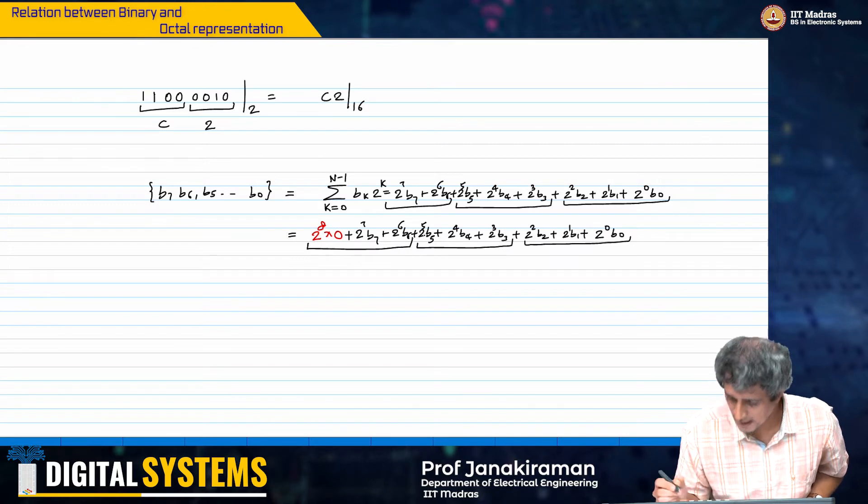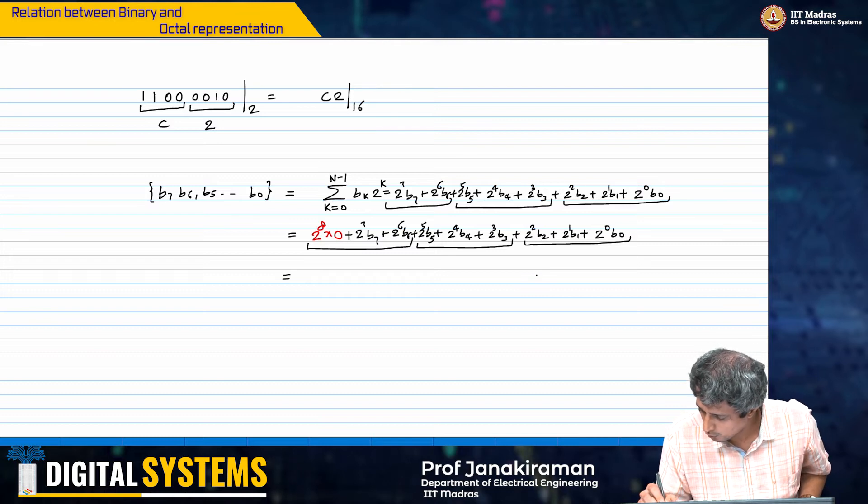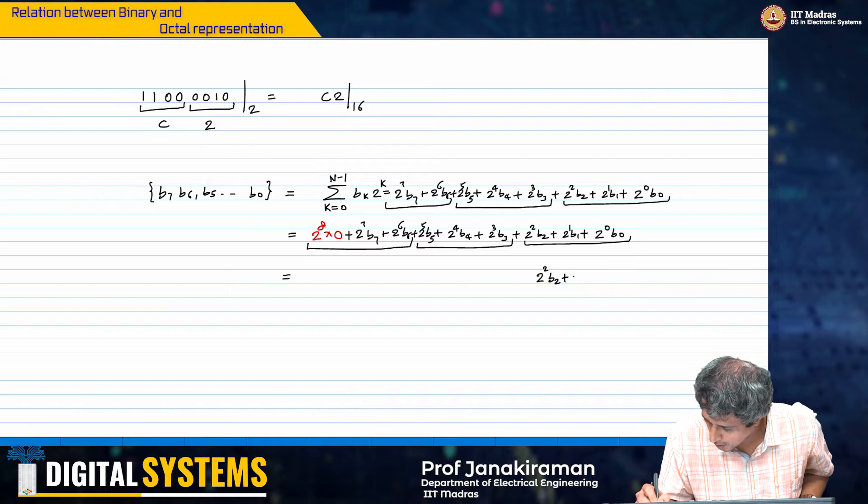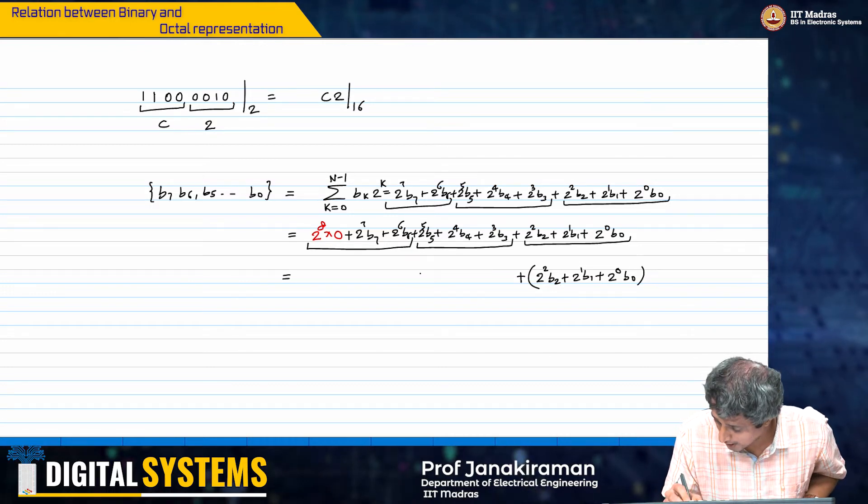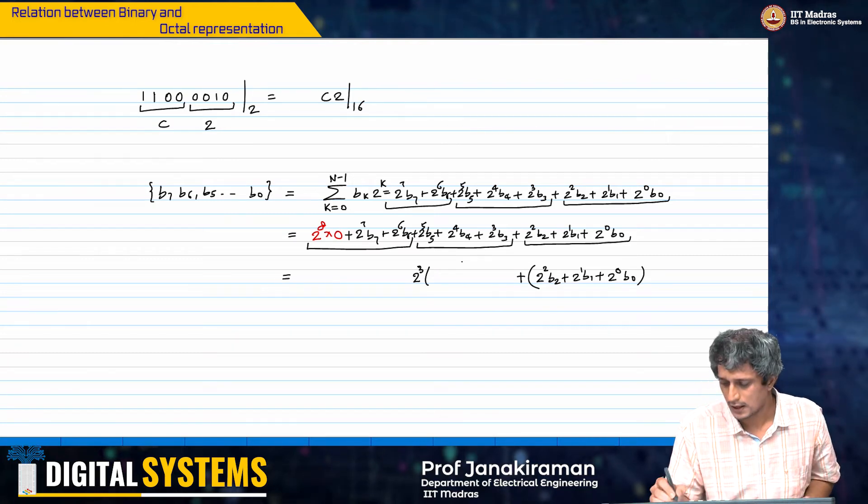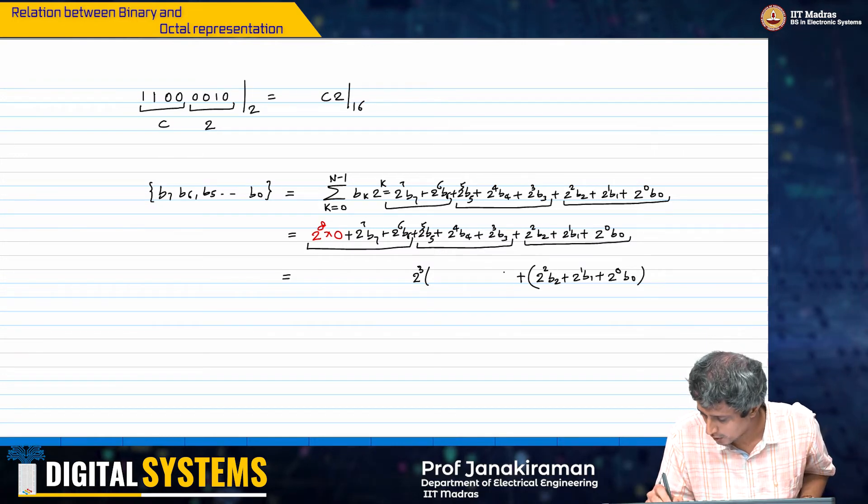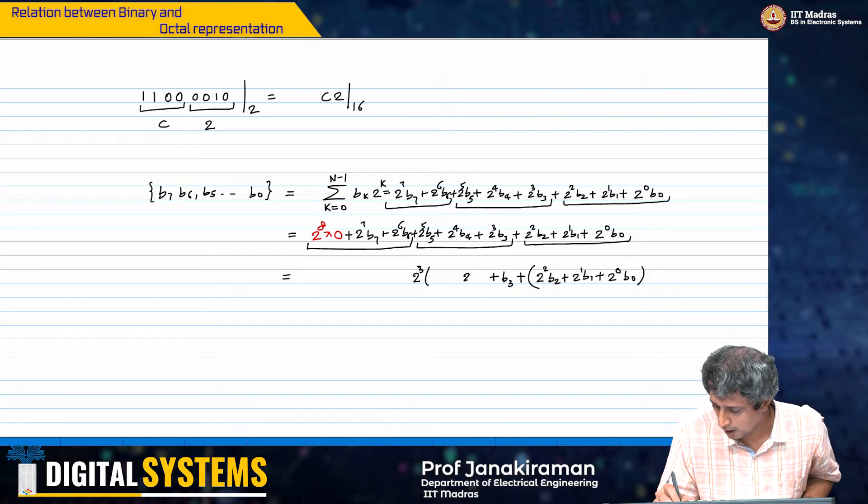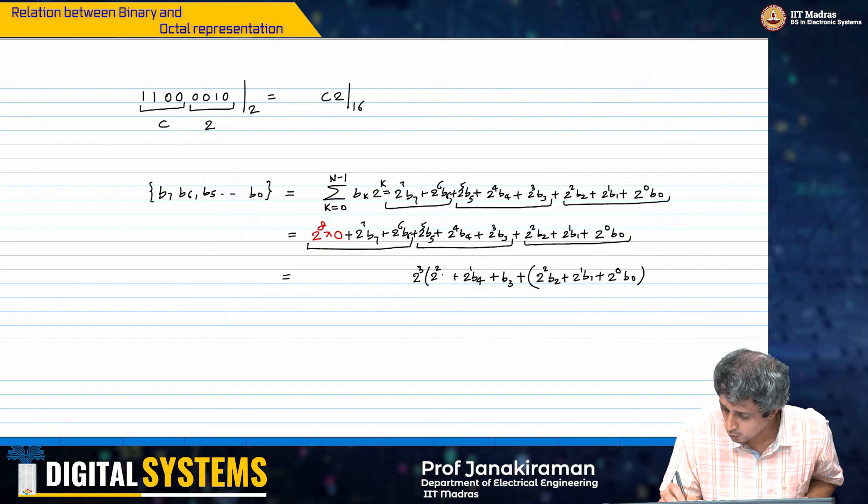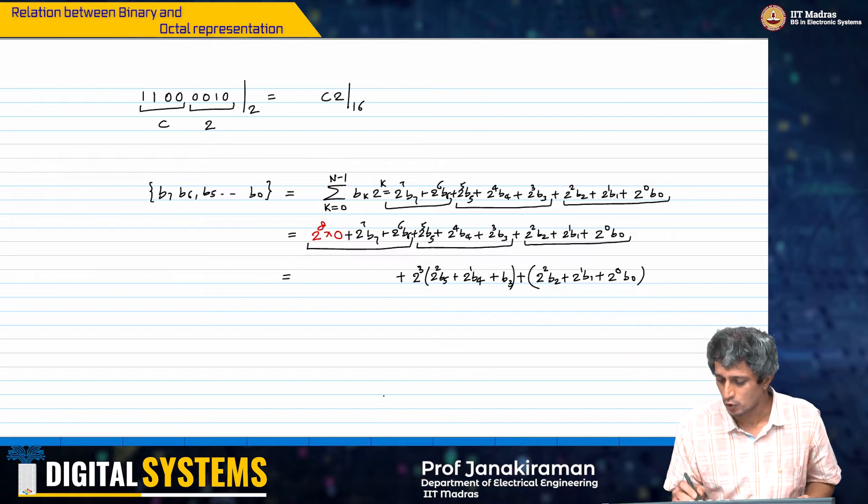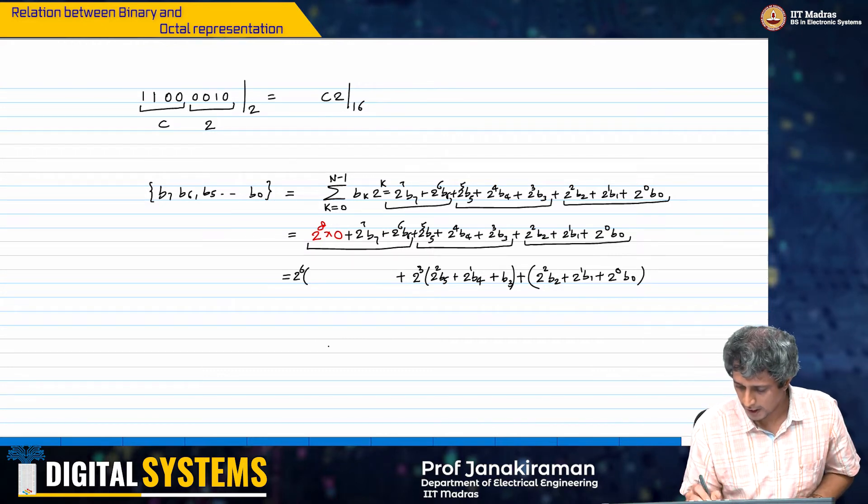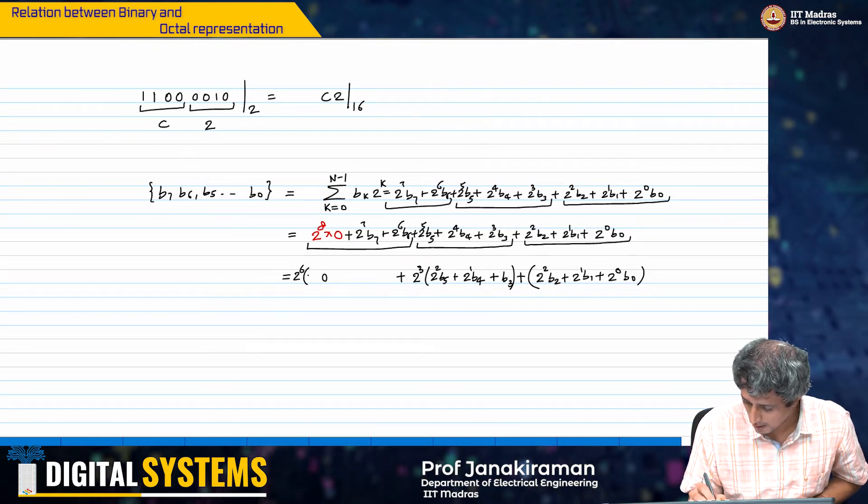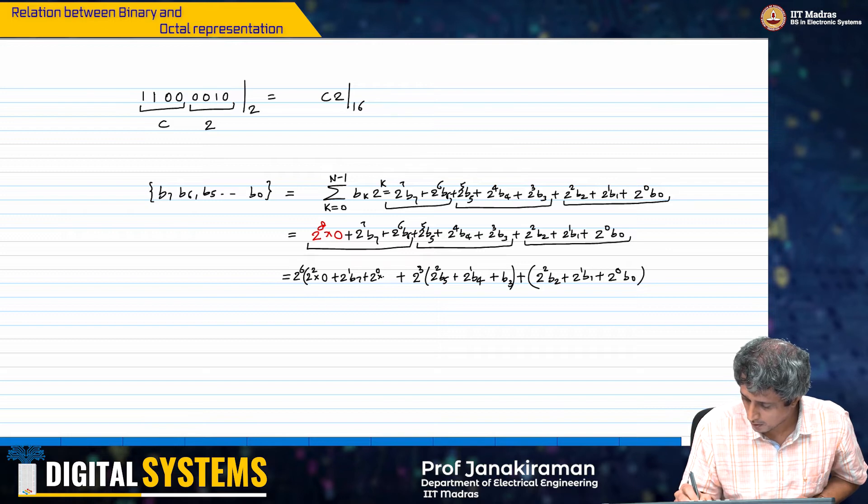I will get it as in sets of 3. Why is this? Because I am going to now get 2 power 2 b2 plus 2 power 1 b1 plus 2 power 0 b0 plus I can now take the 2 power 3 outside. So 2 power 3 into I am going to divide by 2 power 3 for this b3 b4 and b5. So this is just b3 plus 2 power 1 b4 plus 2 power 2 b5 plus then what I do, I take 2 power 6 outside this, into 2 power 2 into 0 plus 2 power 1 into b7, plus 2 power 0 into b6.